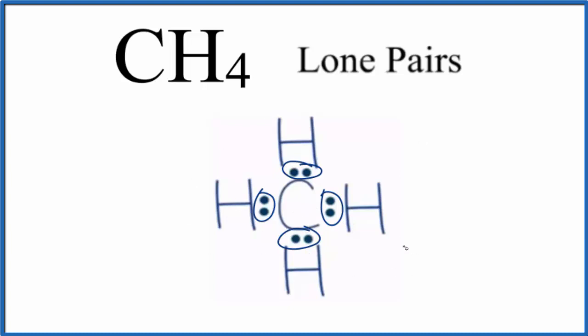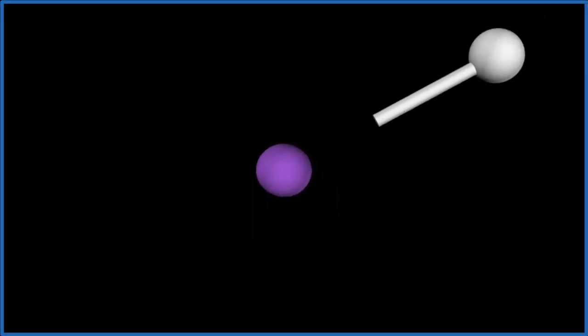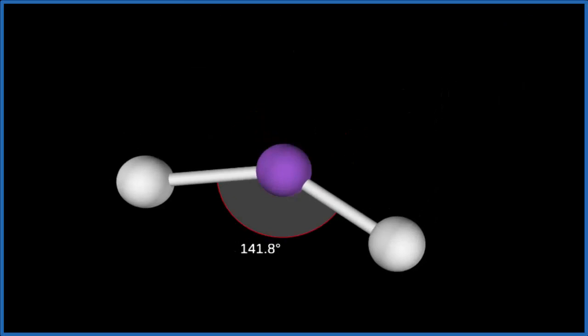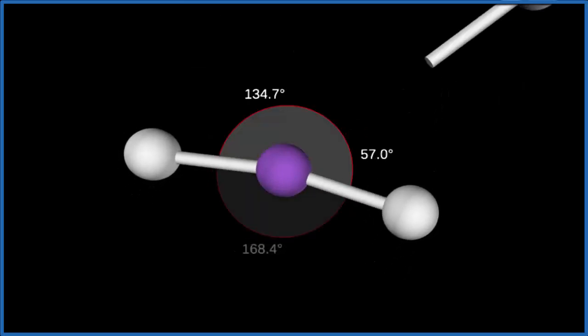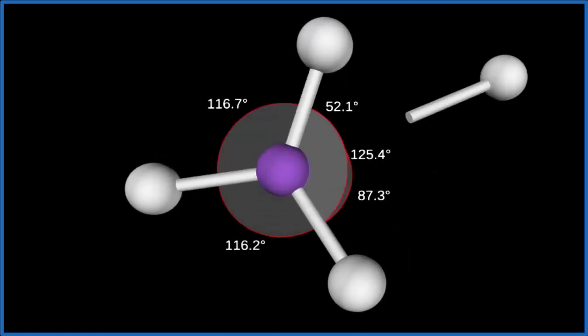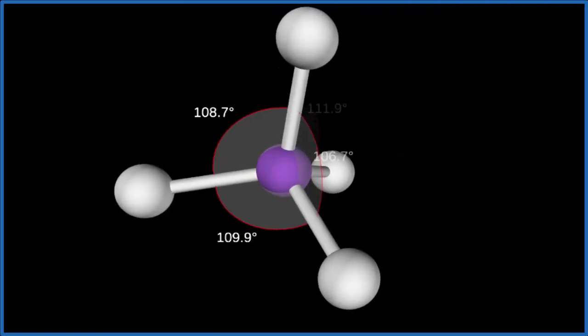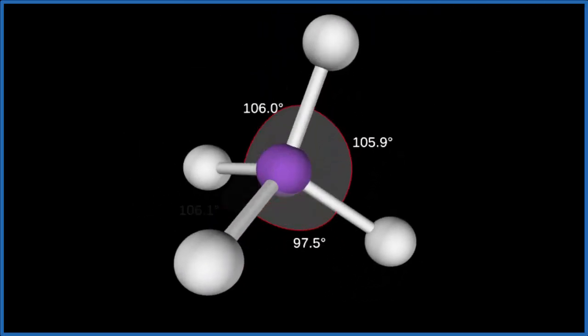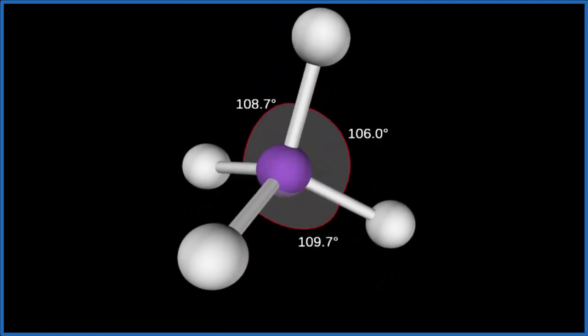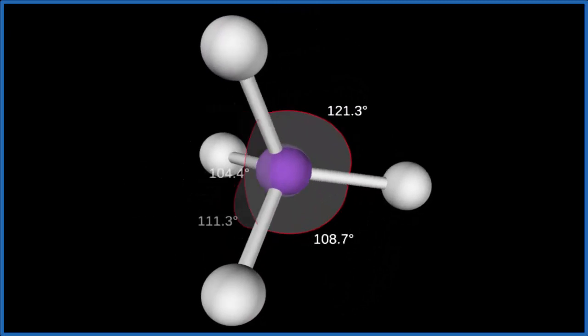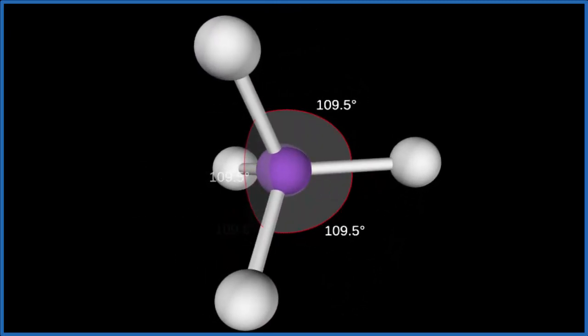Let's take a look at this in three dimensions. The purple will be our central carbon. We had four hydrogen atoms — one, two, you see they spread out, three and four. So we end up with this tetrahedral molecular geometry for CH4, with a bond angle of 109.5 degrees.